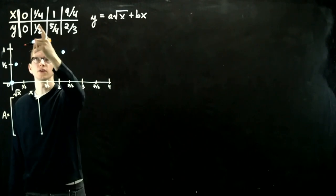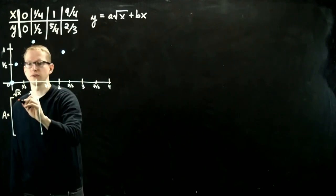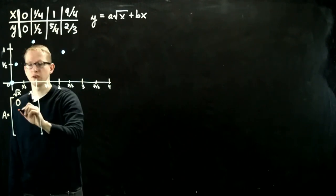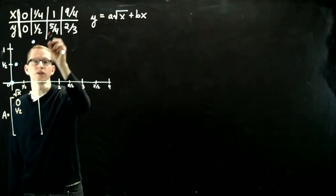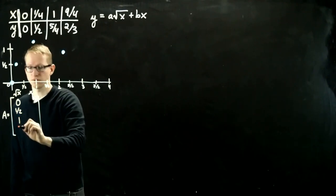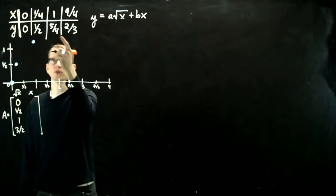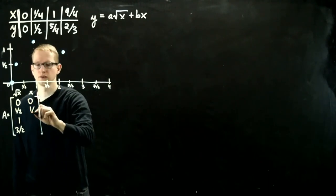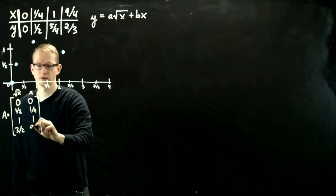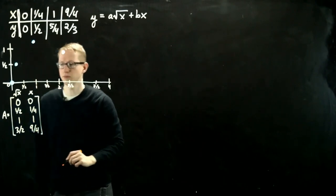So the square root of x, if we go through our values of x here, the square root of x is going to be 0 for the first entry, 1 half for the second entry, 1 for the third, and then 3 halves for the last one. And then for the values of x, we just write the values of x, and this is going to be our matrix A.